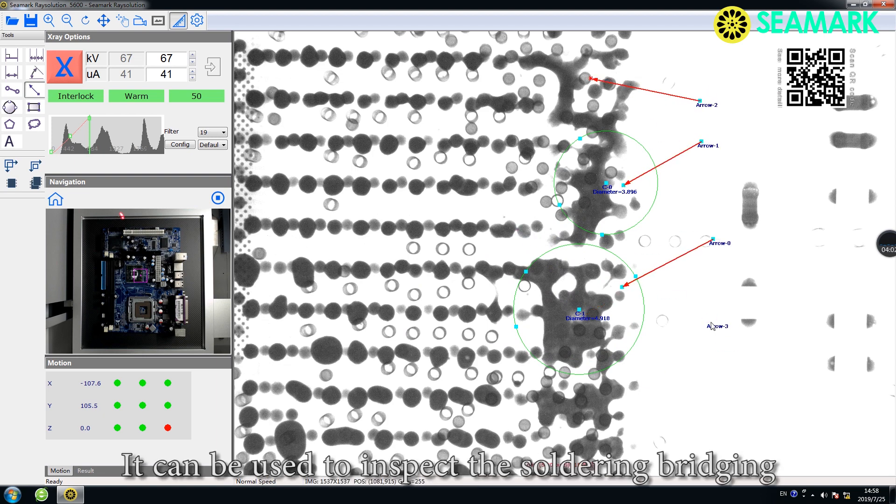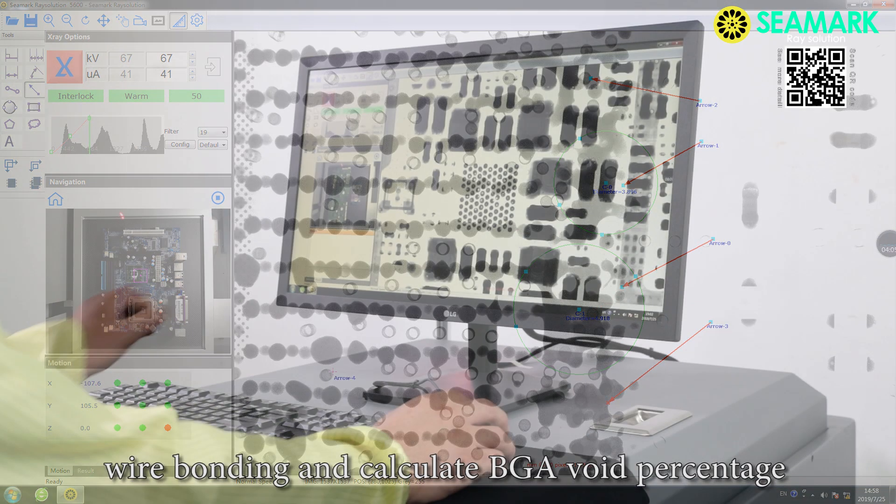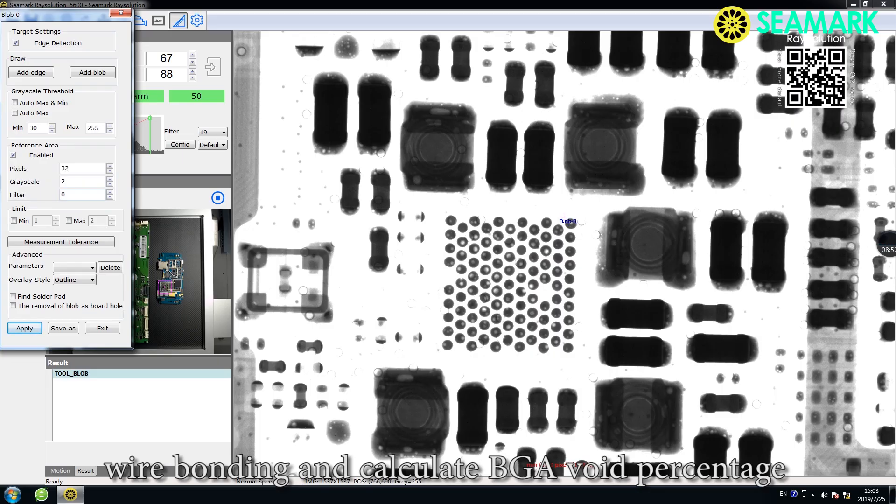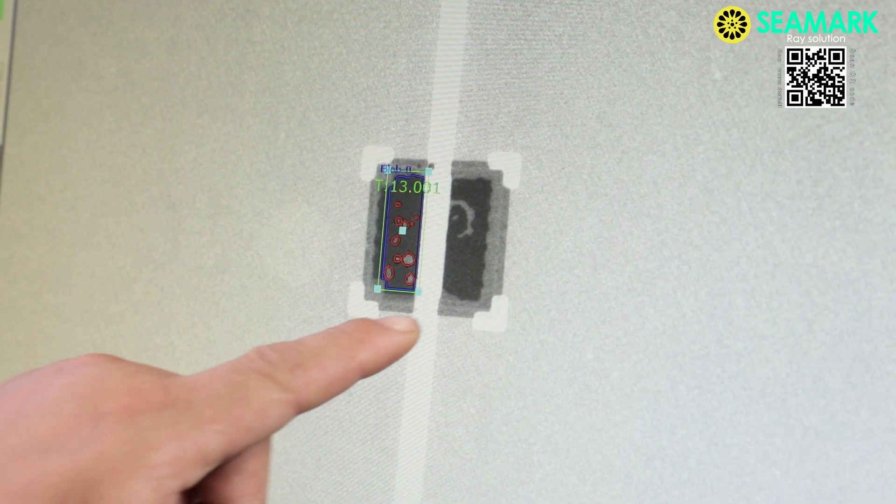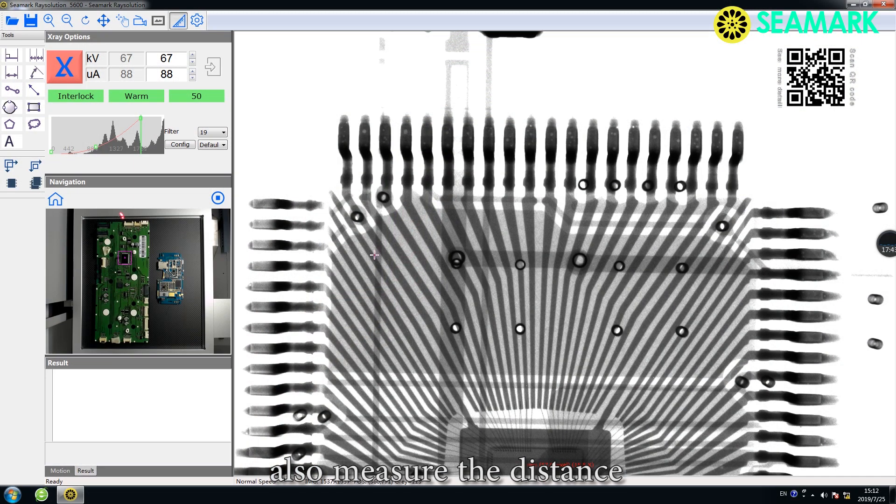It can be used to inspect the sunscreen bridging, wire bonding and calculate BGA void percentage. Also measure the distance.